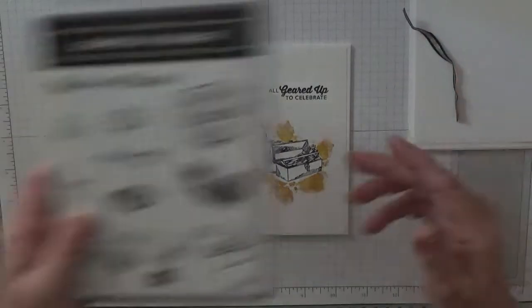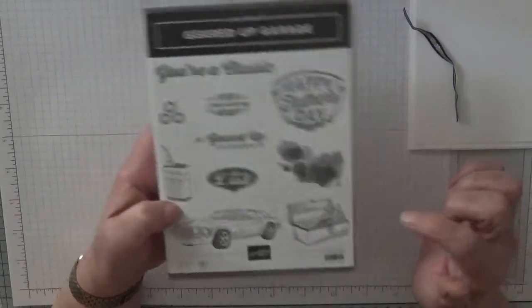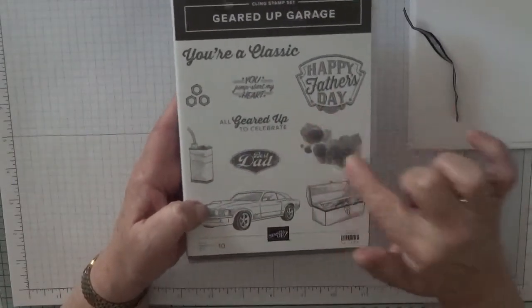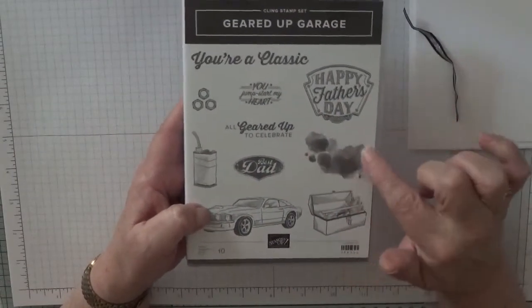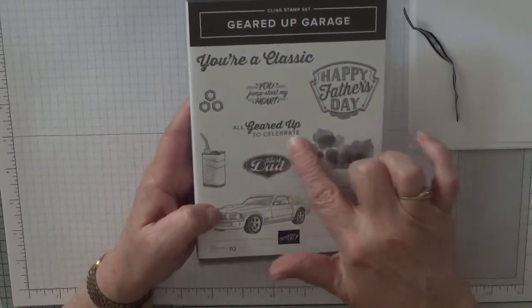I'm also using the stamp set Geared Up Garage. And to make this card we're going to use the toolbox, the oil can, the splodge mark, and the sentiment all geared up to celebrate.